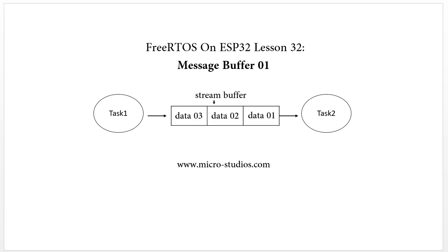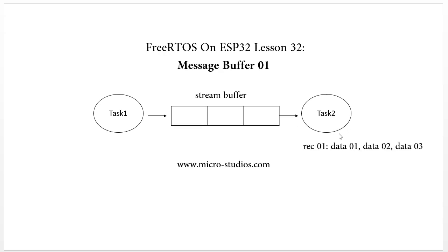But for the stream buffer it is different. Assume we have a stream buffer with three data items: data 01, data 02, data 03. For one receive action, as long as the receive buffer is big enough, it will receive all the data in one receive action.